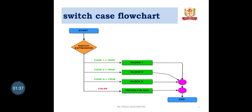Flowchart: Start. If case 1 is true, then block 1 will execute. If case condition 2 is also true, the result combines. Up to case n, if true, block n will also execute and combine the result. The output is then printed. If none of the other cases are true, the default block will execute.